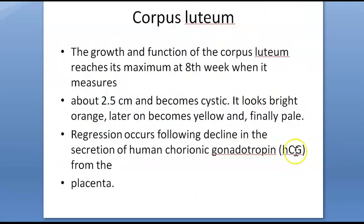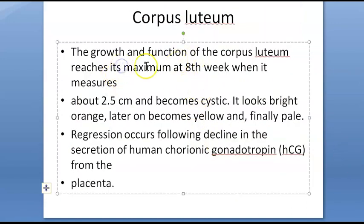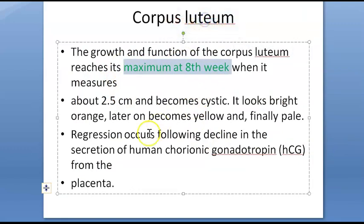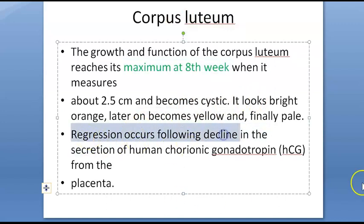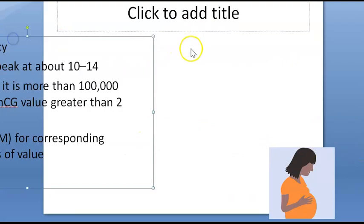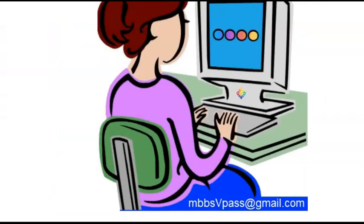The corpus luteum is at its best at around the eighth week. After that, regression occurs. So basically the corpus luteum is very important, maintained by HCG until the placenta can take over.